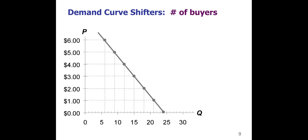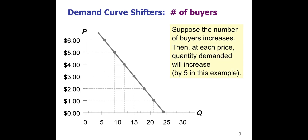Looking at this line here, using our example with packs of gum: if more people who chew gum come into the market, we are going to increase demand. In this case, demand increases by five units at every single price, shifting the entire demand line to the right. We call that an increase in demand, or an increase in the market demand for gum.